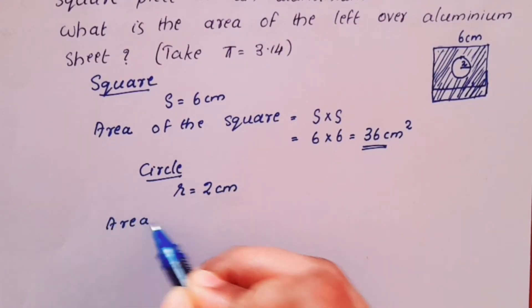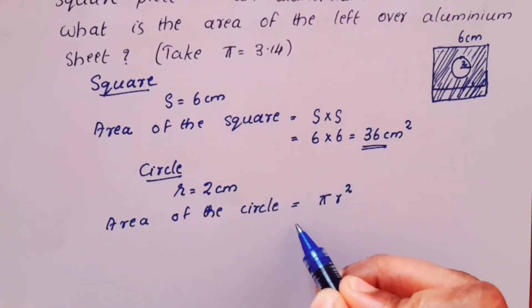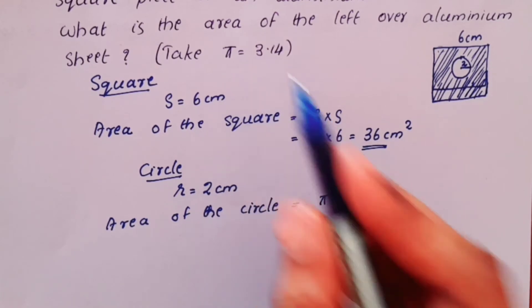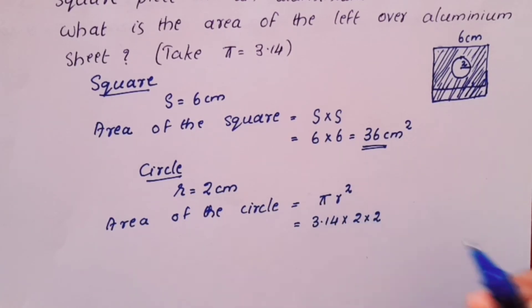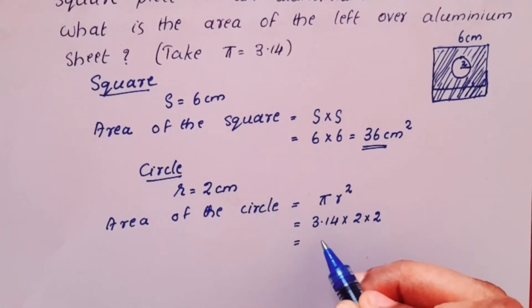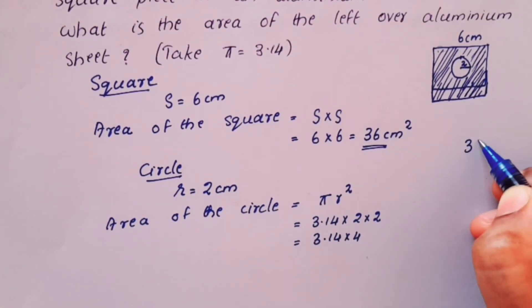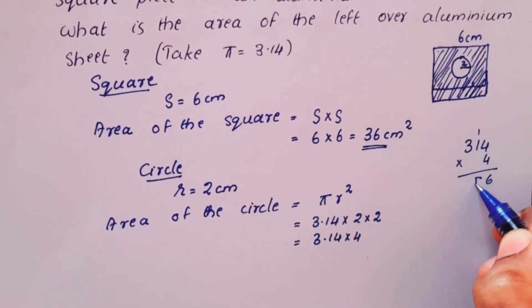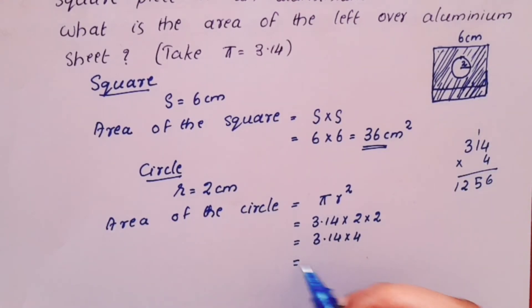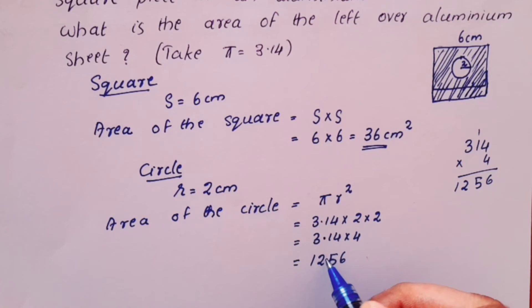The area of the circle is equal to π r squared, which equals 3.14 × 2 × 2, which is 3.14 × 4. That gives us 12.56 cm².